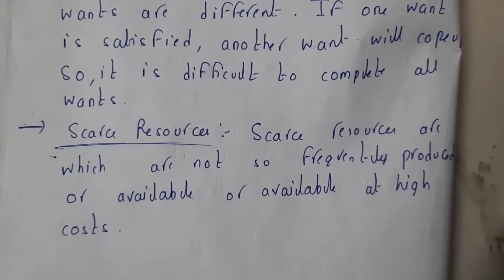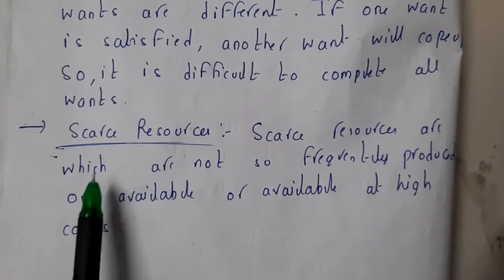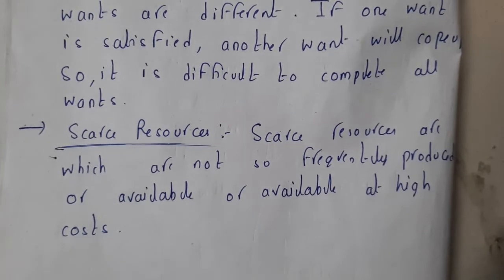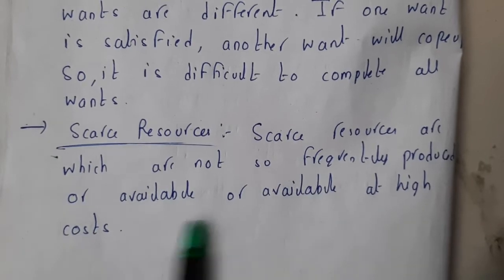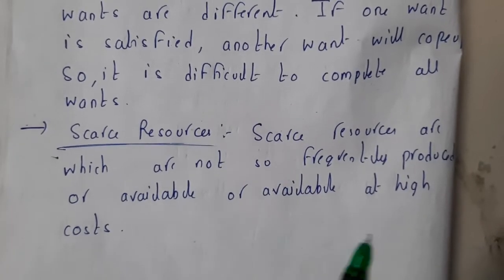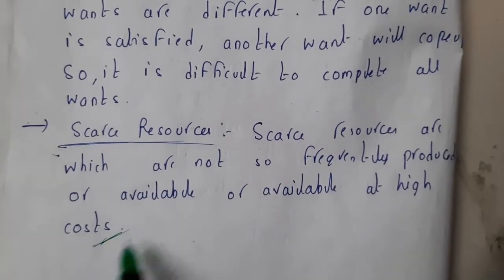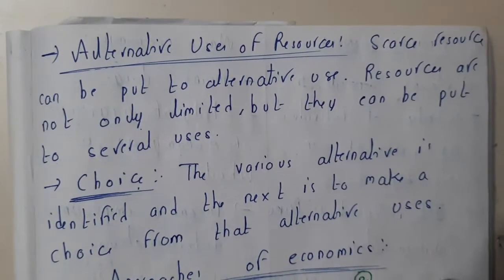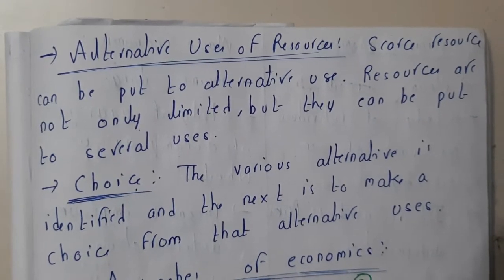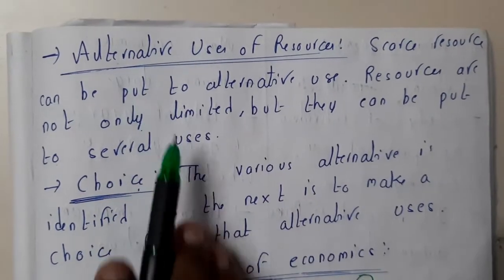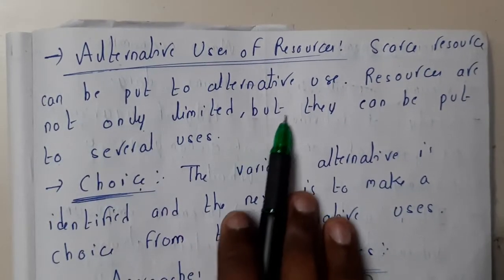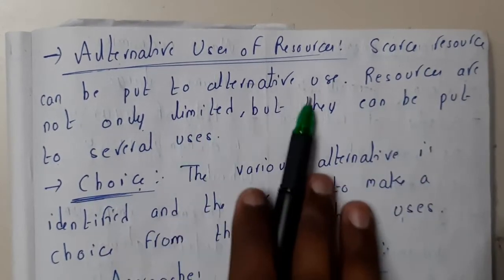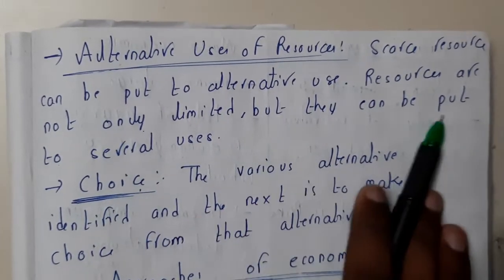Now let us go through scarce resources. Scarce resources are resources which are not available so easily or frequently — they are not so frequently produced or available, or available only at higher costs. To address scarce resources, we have alternative resources. Alternative resources are used to replace scarce resources.